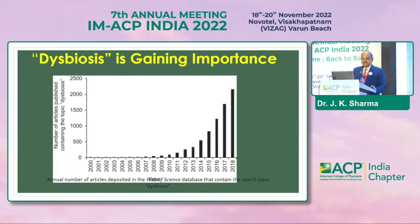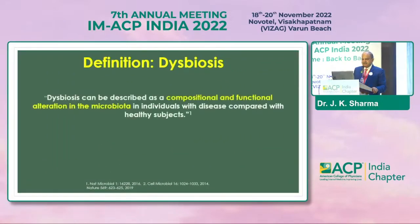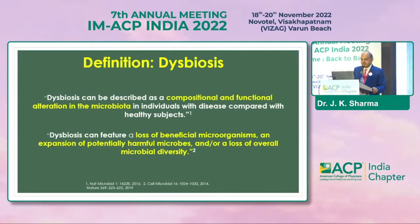Dysbiosis is another very important term gaining importance at the present time. Looking at the data, from 2000 to 2006 there was hardly any attention given to dysbiosis, but by 2018 the number of articles published containing the topic dysbiosis was more than 2000. Dysbiosis can be described as a compositional and functional alteration in the microbiota in individuals with disease compared with healthy subjects.